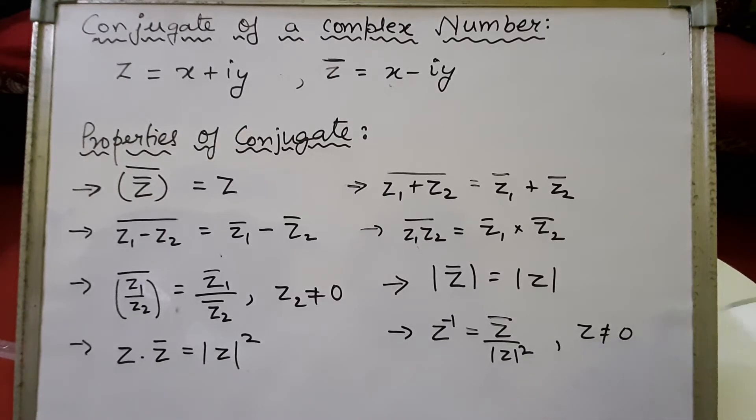The multiplicative inverse, z to the power minus one, equals the conjugate of z upon mod of z squared, provided z is not equal to zero. Please note down these properties.